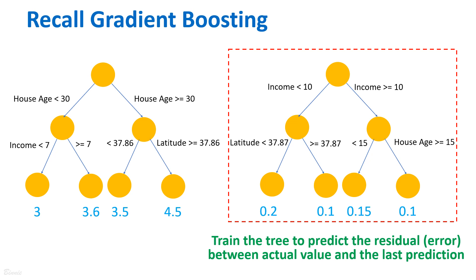However, only one decision tree is not reliable. Gradient boosting is an ensemble learning method that sequentially trains a series of weak decision trees. Each new tree is trained to correct the residual of the previous models.